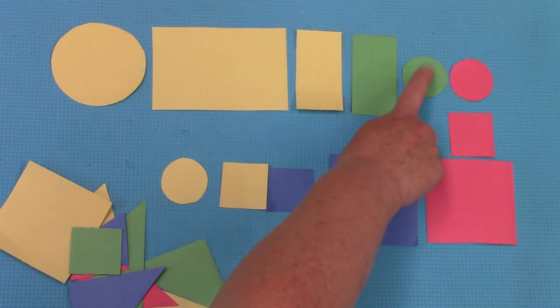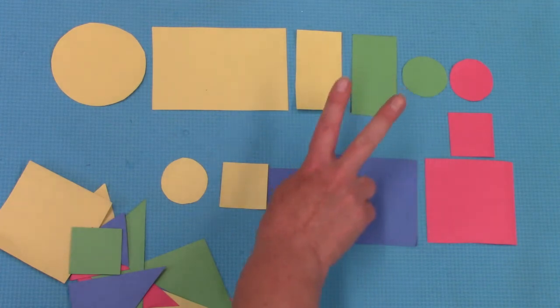Green, green. Small, small. They're alike in two ways and they're different in shape.